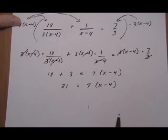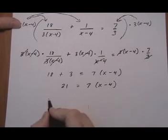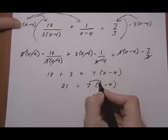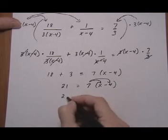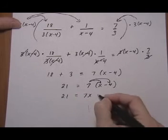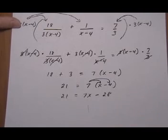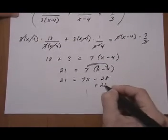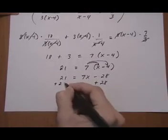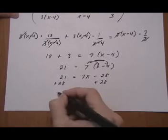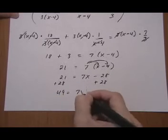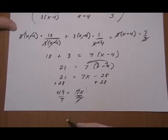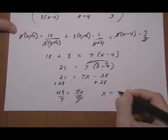If what I just said doesn't really make sense or you're not too sure, keep following the normal procedure. So now we would clear parentheses. 21 equals 7x minus 28. And then we're going to isolate the x so we add 28 to both sides. And that gives us 49 equals 7x. Divide both sides by 7. And we have x equals 7.